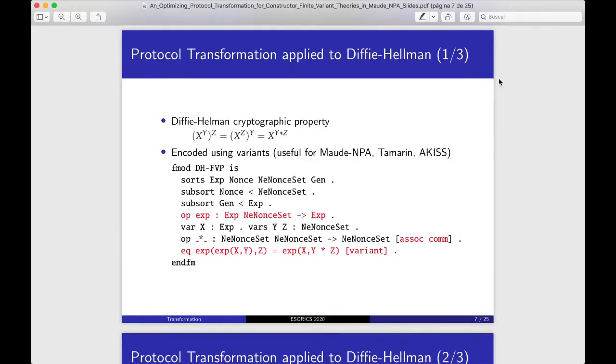I am going to explain the transformation step by step, using the Diffie-Hellman protocol as an example. Diffie-Hellman is a very famous protocol, and its cryptographic property is the exponentiation. In Maude-NPA, we can use order-sorted theories to describe data in an accurate way. In this Diffie-Hellman example, the first argument of the exponentiation can be a generator, GEN, and exponentiation, X.